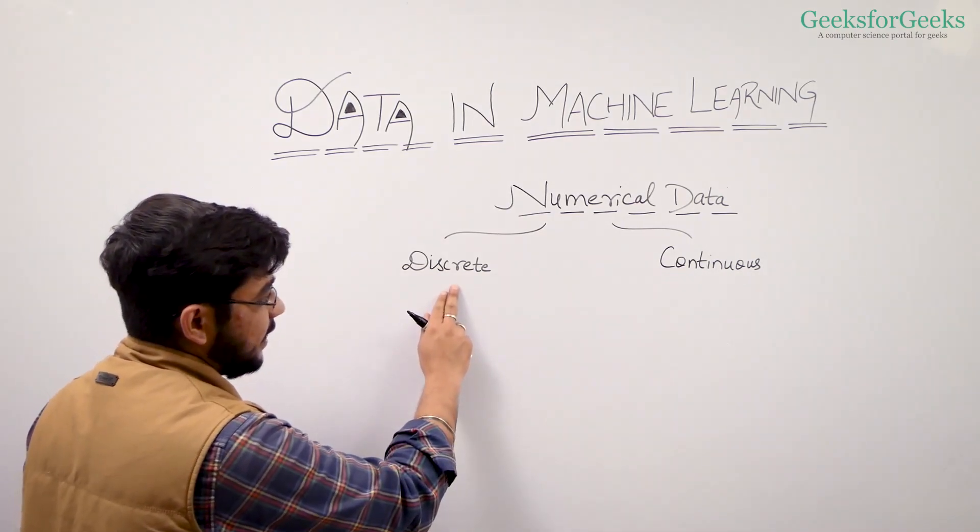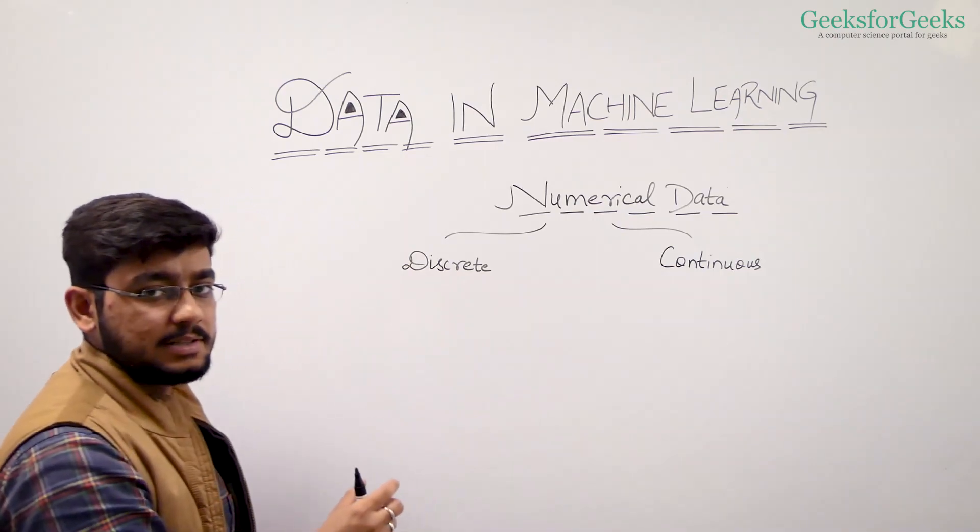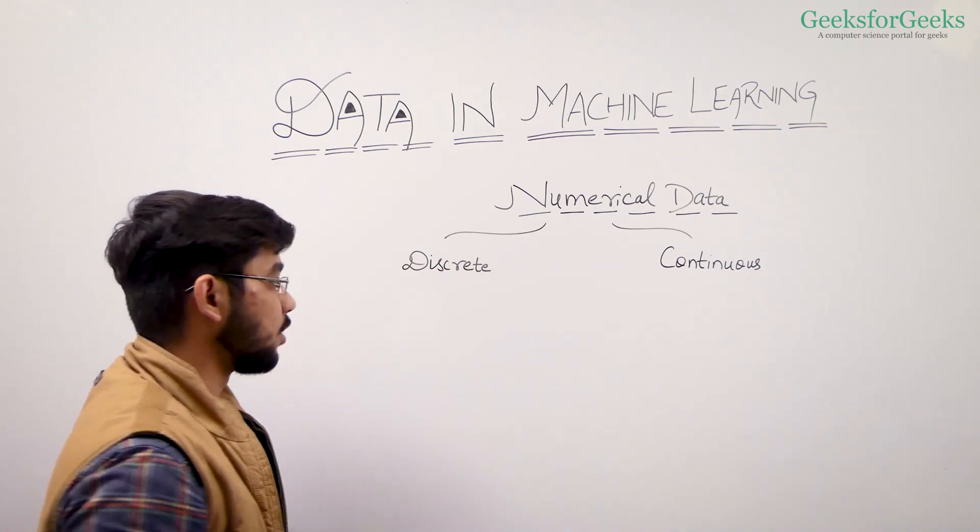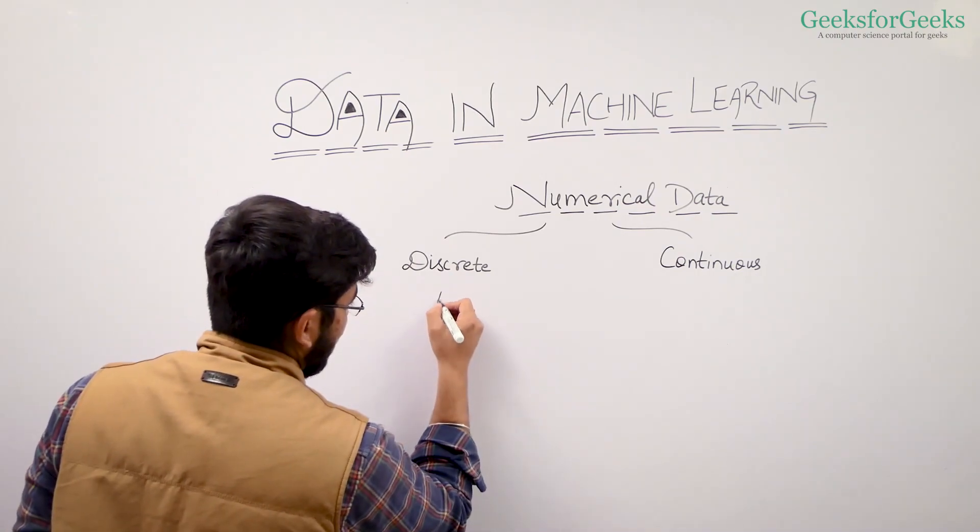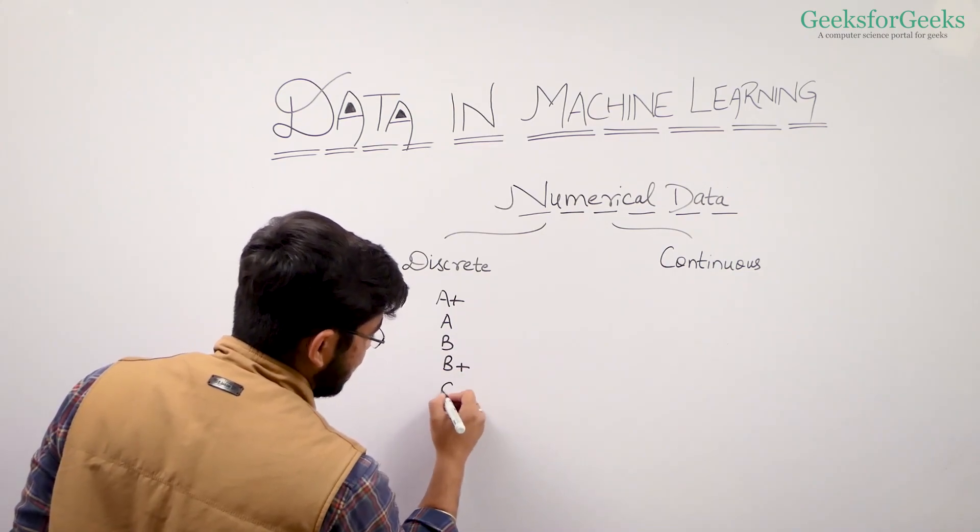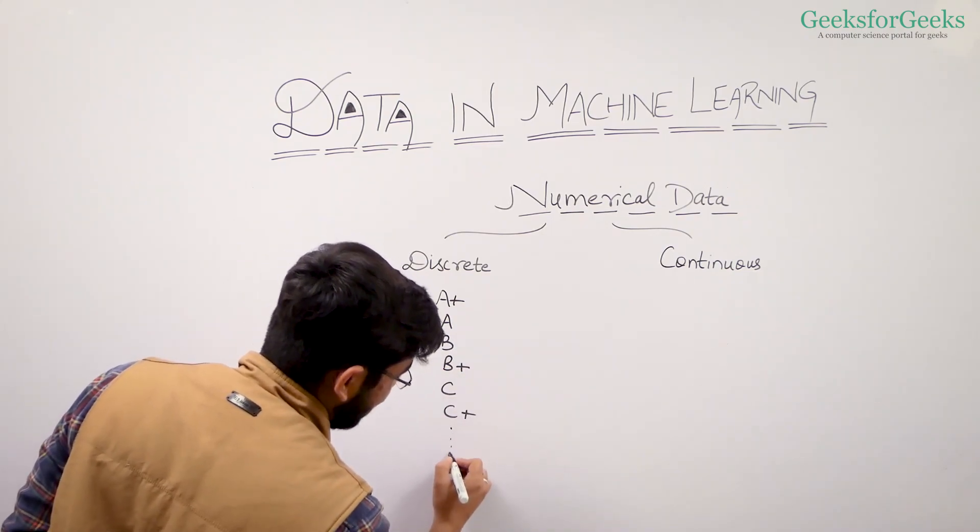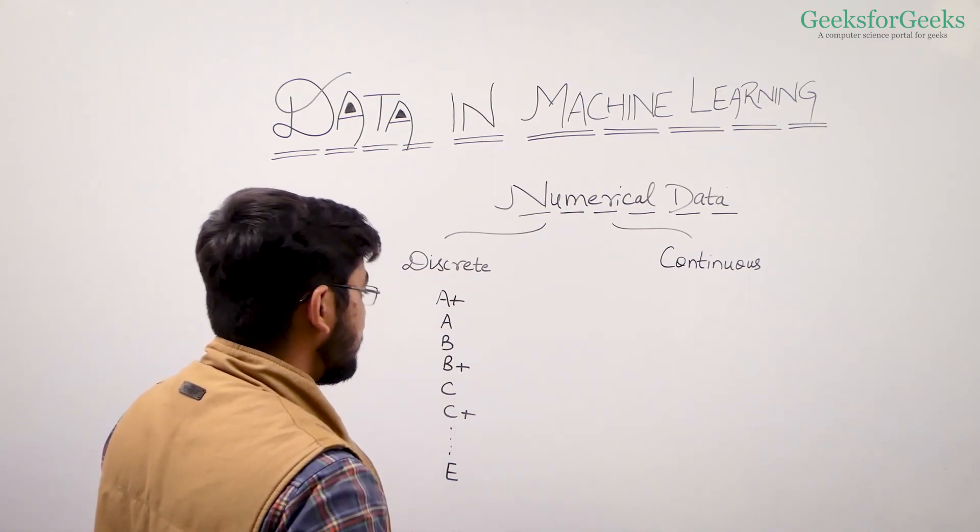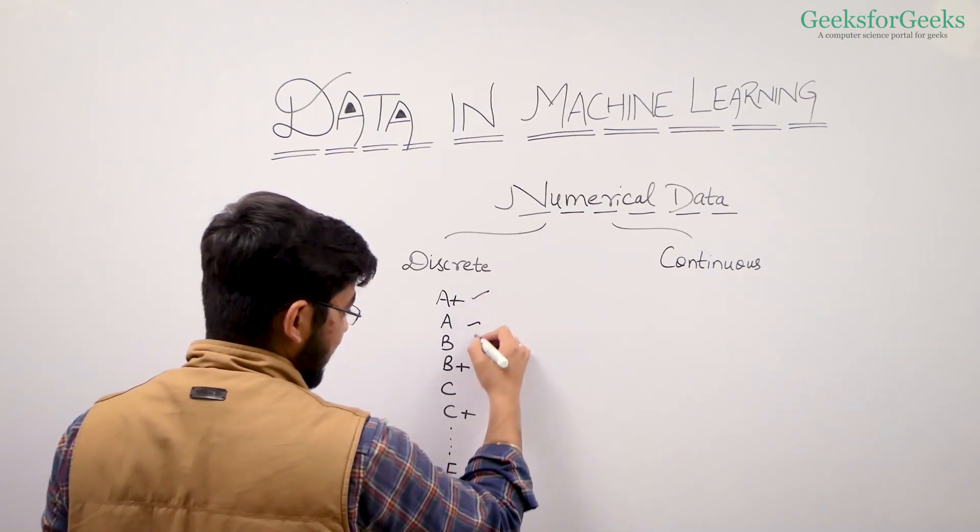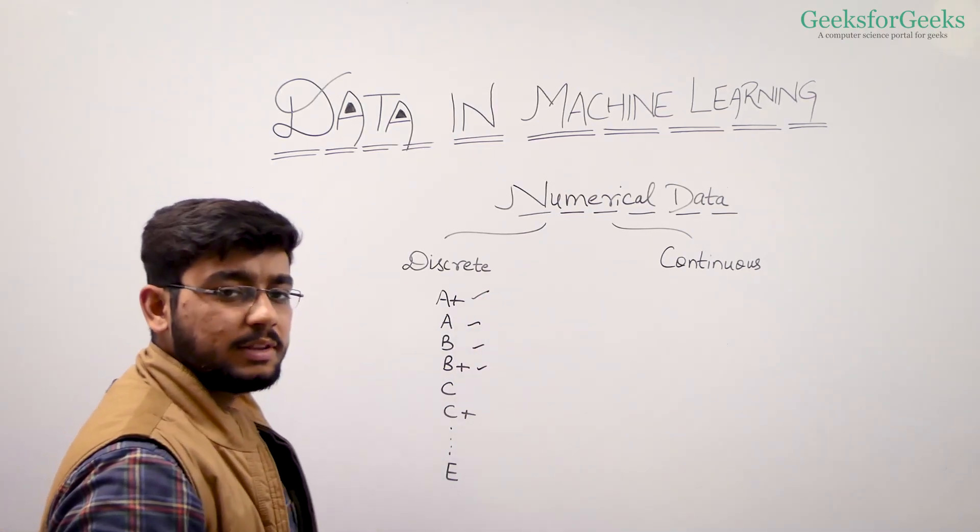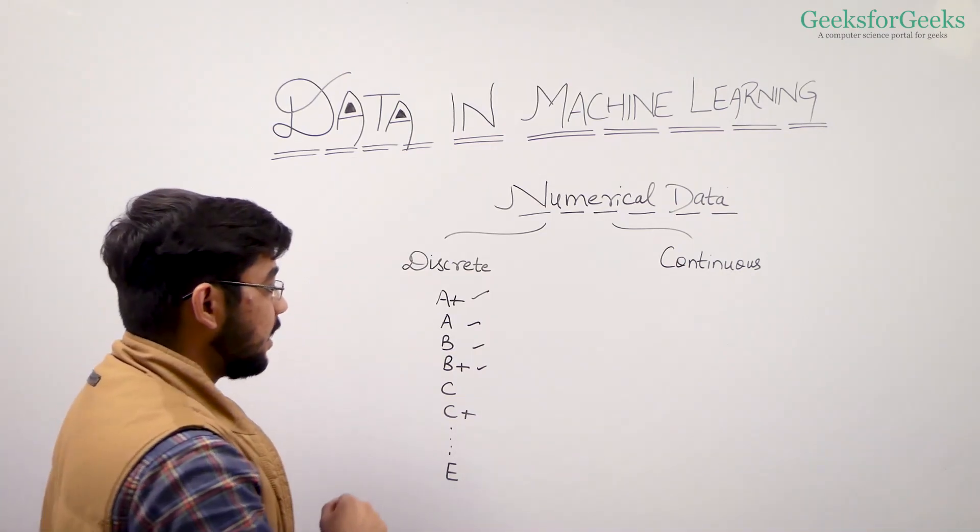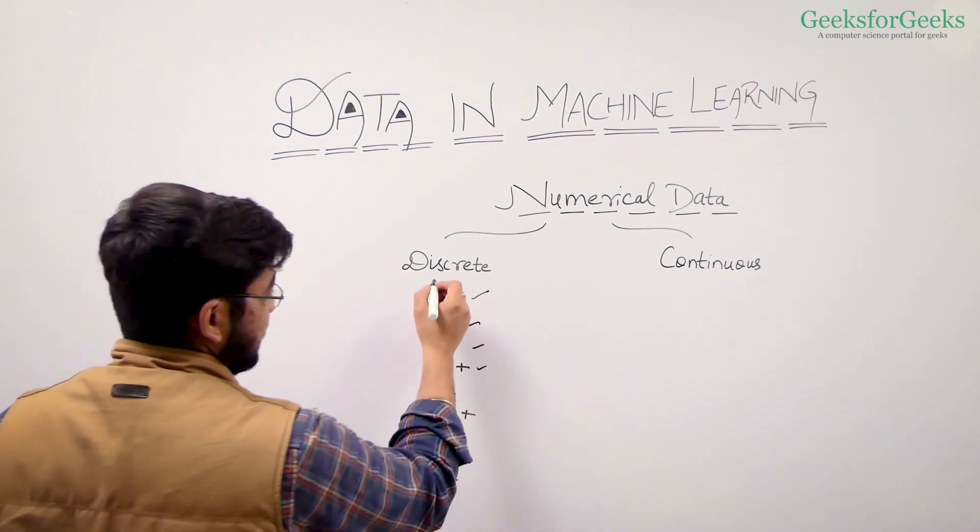In case of discrete, we have fixed labels. Suppose, let's take an example of grades that a student scores: A+, A, B, B+, C, C+, going till E. In case of this data, we have fixed labels. We know that the output will be from either of these values. That's why we call it discrete.